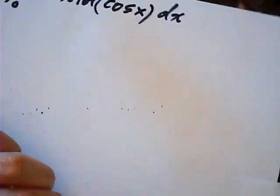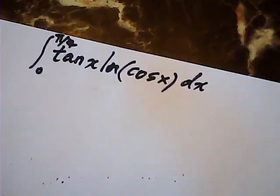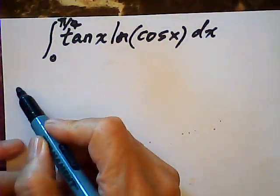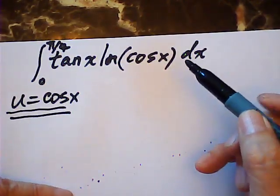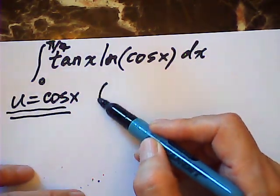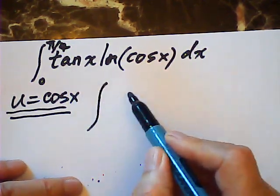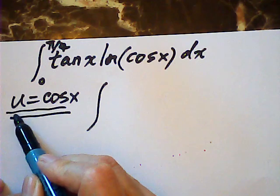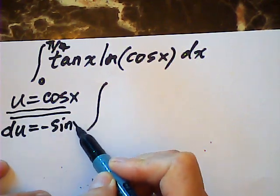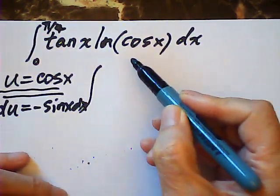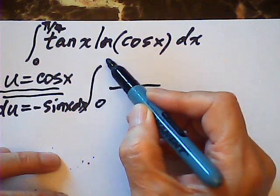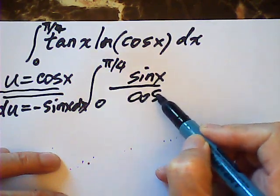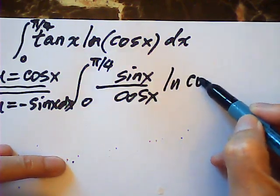Okay, method two. Method two uses a simple substitution: let u = cos(x). Then the integral of tan(x) · log(cos x) dx becomes something we can handle directly.